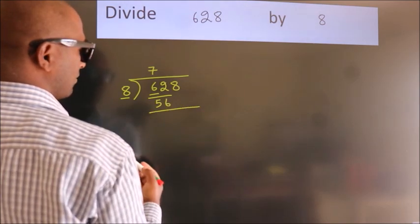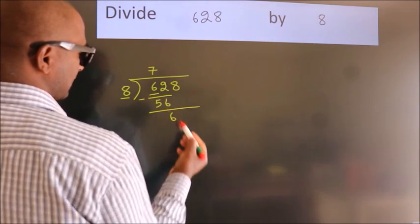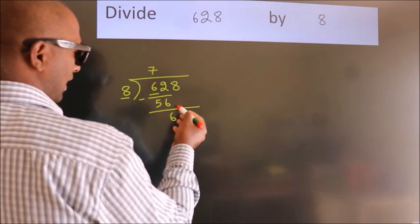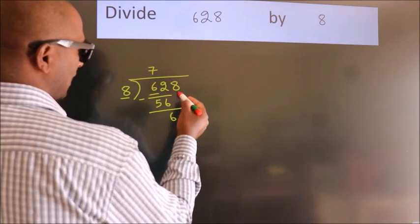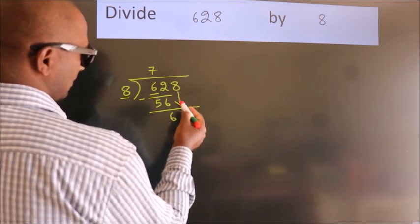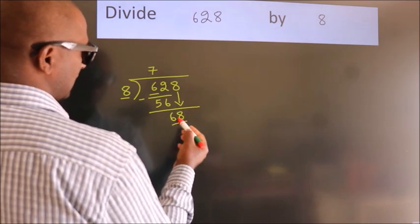Now we should subtract. We get 6. After this, bring down the beside number, so 8 down. So, 68.